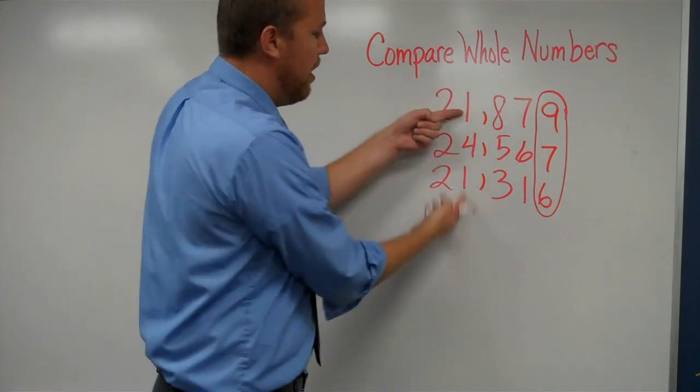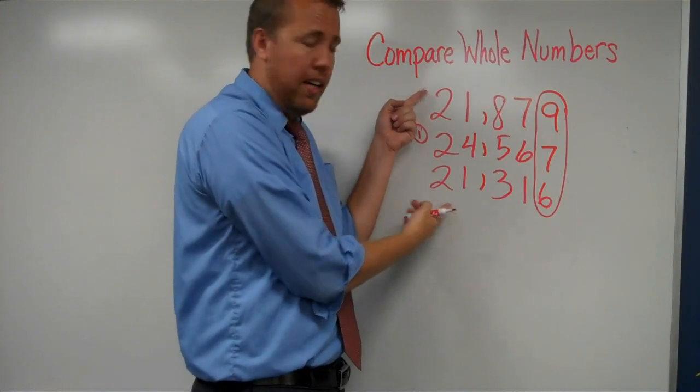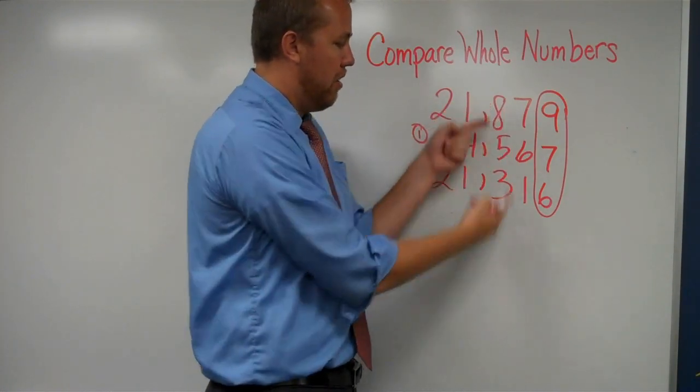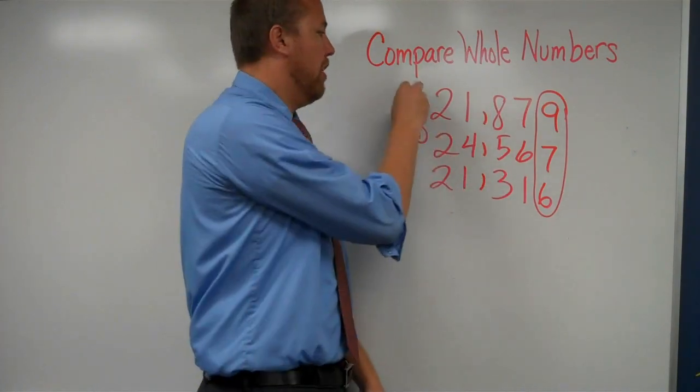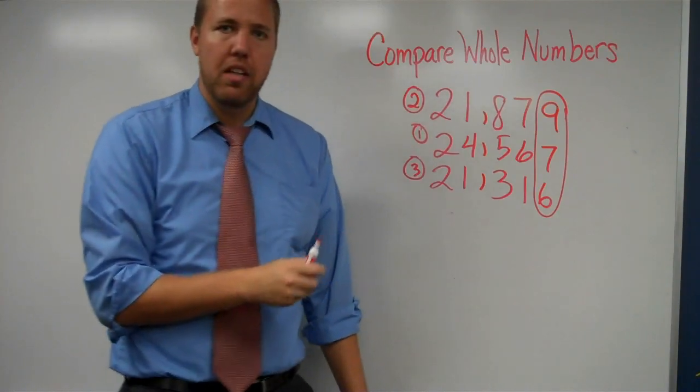And then the second, oh, they both have 1,000. They both have 20,000. They both have 1,000. And then hundreds place, 800 versus 300. So I know that this one is next, and that one comes last.